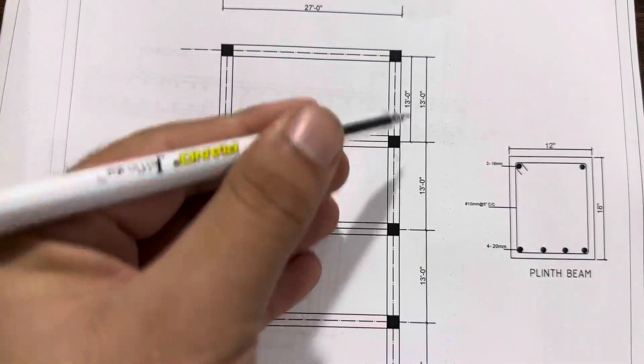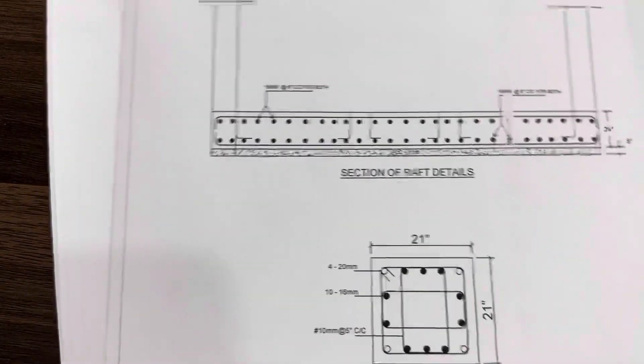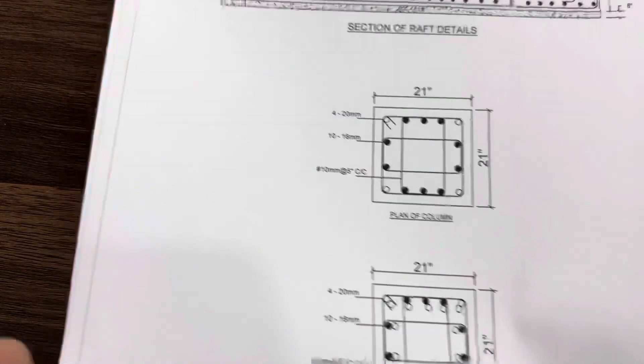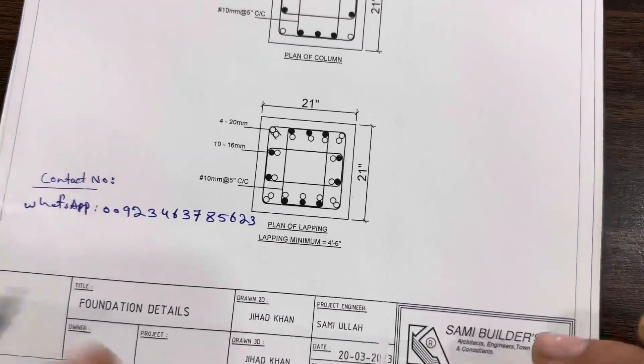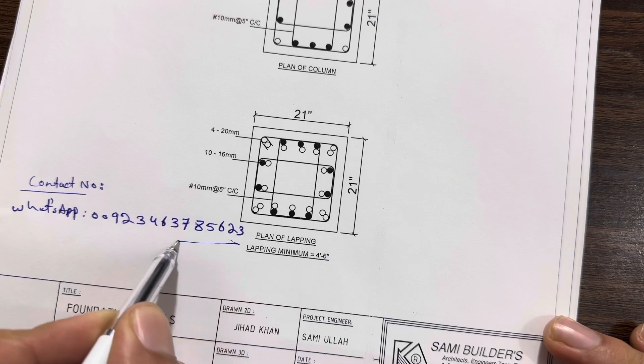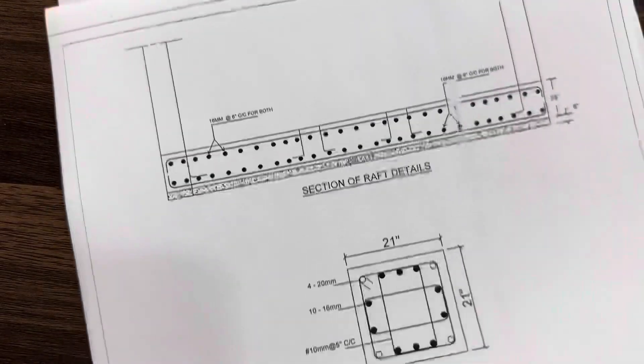This is that plot, as you can see the columns. I did its raft foundation details and also the column size and inside steel reinforcement. If you need house planning, structural drawing, 3D animation for any type of building, you can contact me on this WhatsApp number. This is paid services, not for free.